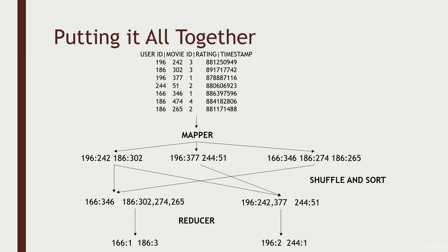Let's go back to the example from the previous lecture. We started off with a bunch of movie ratings data, our mapper extracted that into key-value pairs, and then the shuffle and sort operation organized all the values associated with each unique key, which then got fed to our reducer to produce our final output.